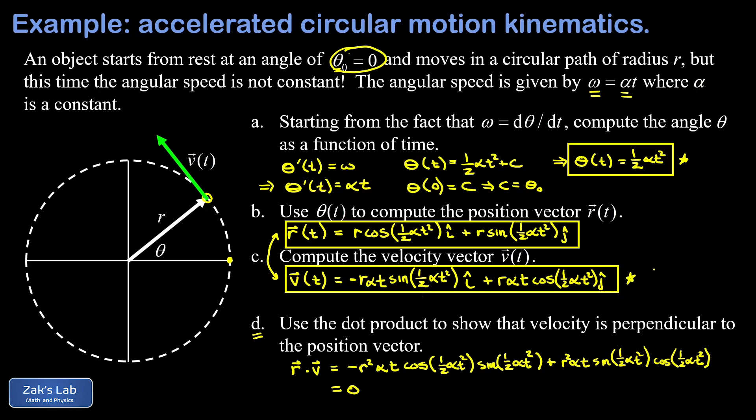But if you want to investigate the direction of the acceleration vector, you can go ahead and compute it by taking another time derivative. And then you could ask, is the acceleration vector perpendicular to the velocity vector by taking the dot product? And what you're going to find is that that dot product no longer vanishes.